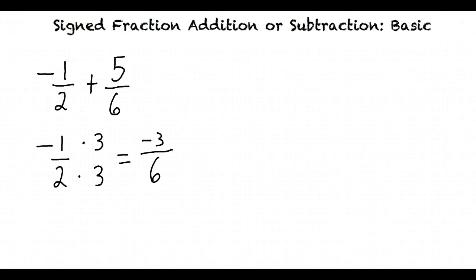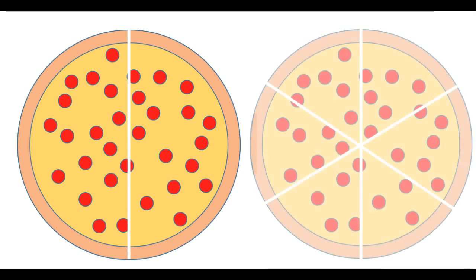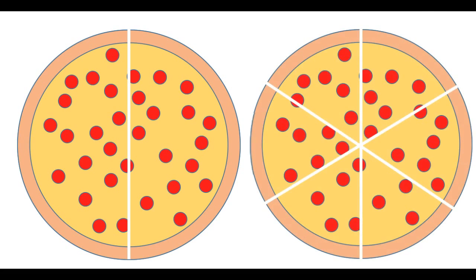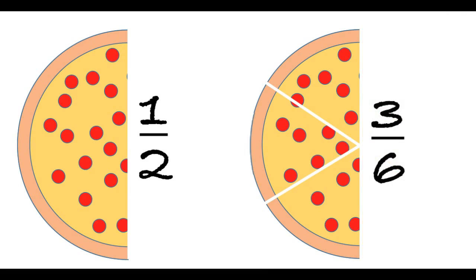Why is 3 over 6 equal to 1 half if the numbers are different? Imagine a pizza cut into 2 equal slices, and then imagine another pizza cut into 6 equal slices. If you eat 1 slice from the first pizza, representing 1 half of the pizza — 1 of the 2 slices — we can see that the same amount of pizza is gone as eating 3 of the other pizza's slices, which is 3 sixths, or 3 of 6 slices.